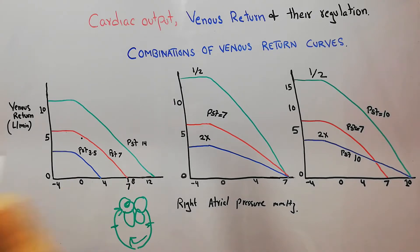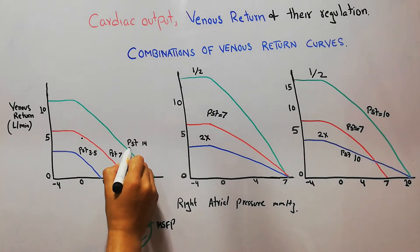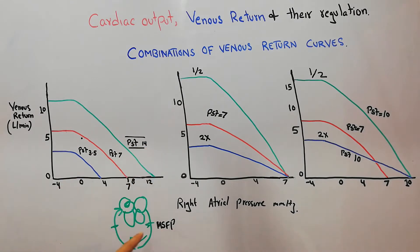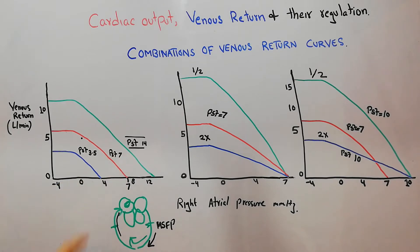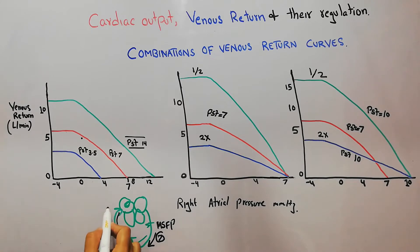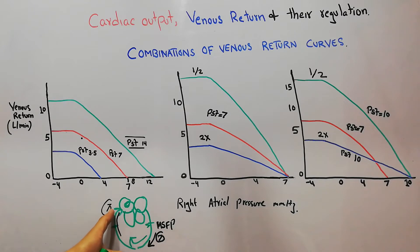If we increase or decrease the mean systemic filling pressure — denoted as PSF — this is the pressure helping push blood toward the right atrium. Normally it is seven mmHg. When the right atrial pressure reaches seven, blood flow toward the right atrium stops because that equals the maximum mean systemic filling pressure. Above seven, the mean systemic filling pressure cannot force more blood into the right atrium.